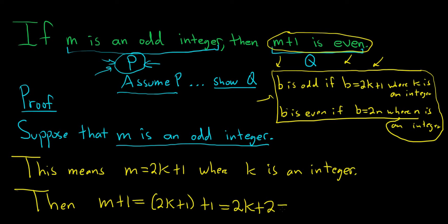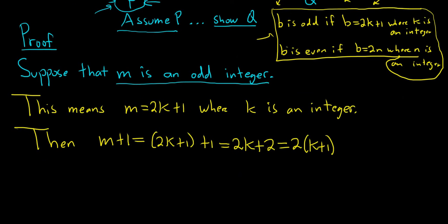We can factor something out now. You can pull out a 2 so you get 2 times (k plus 1), and here we're going to do a little cool move which is equal to 2n. What's n? Well we made it up where n equals k plus 1 is an integer.